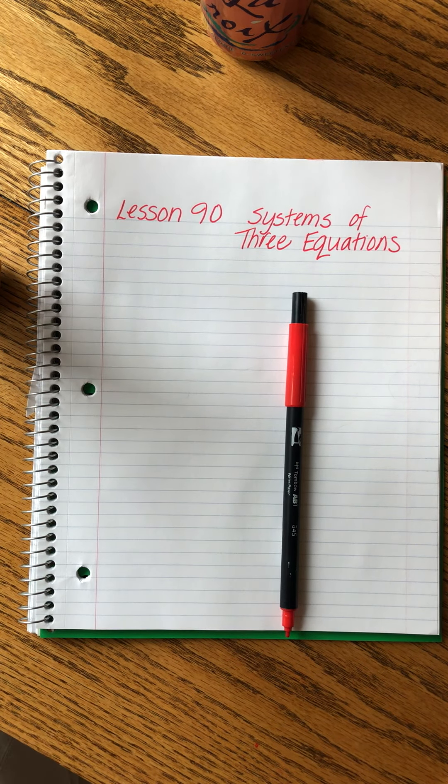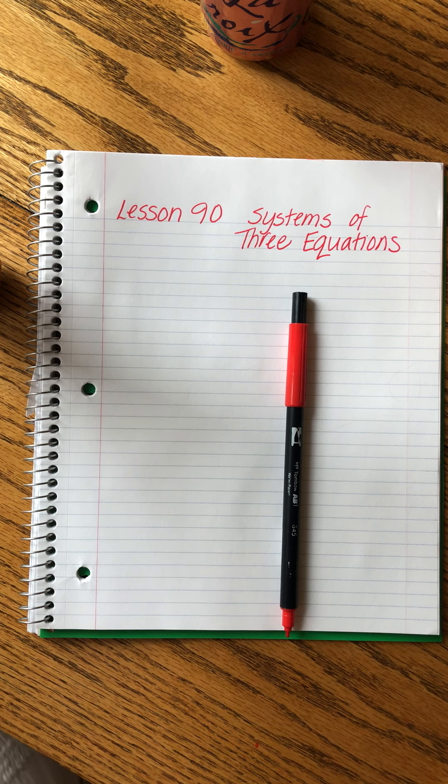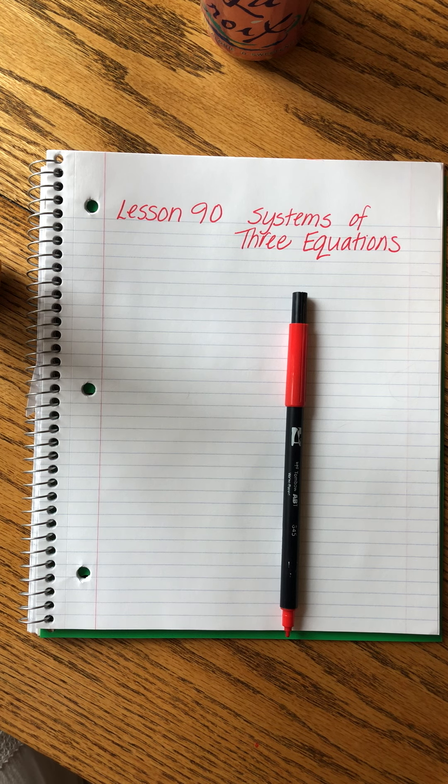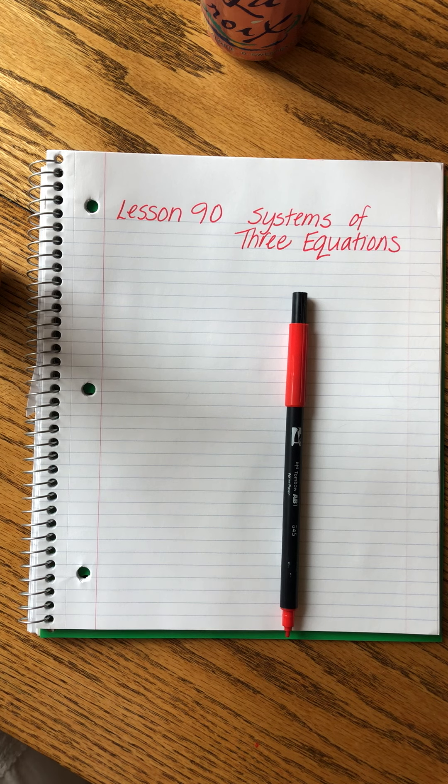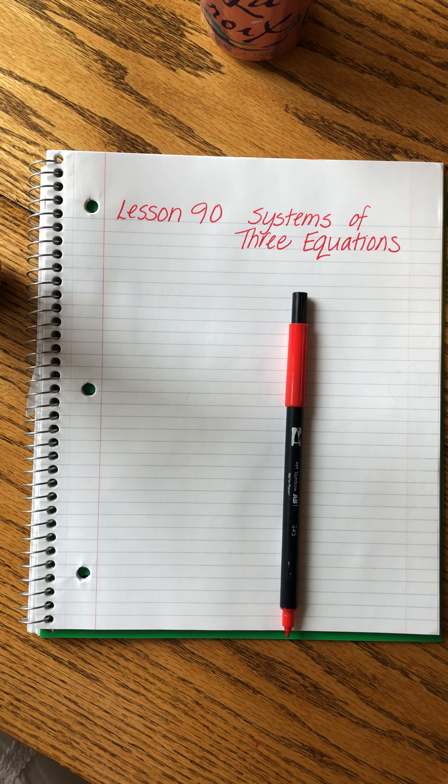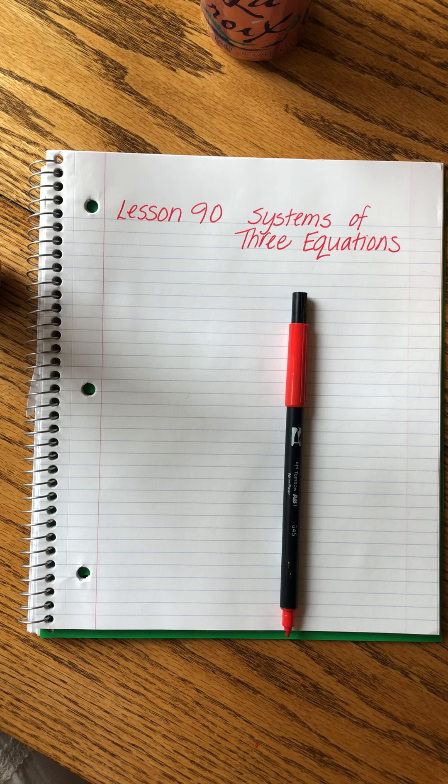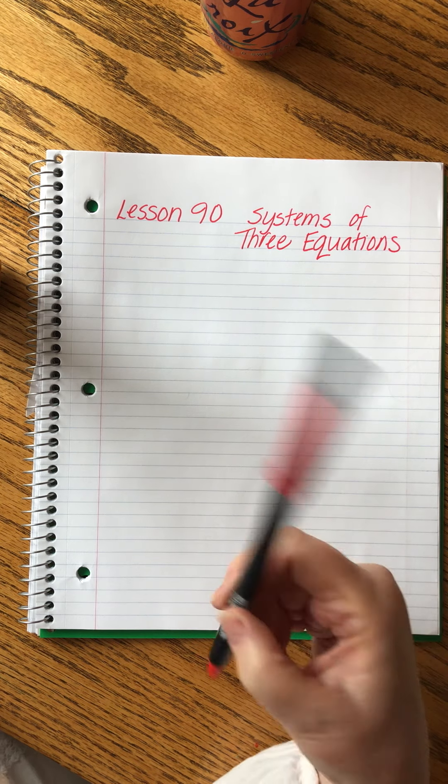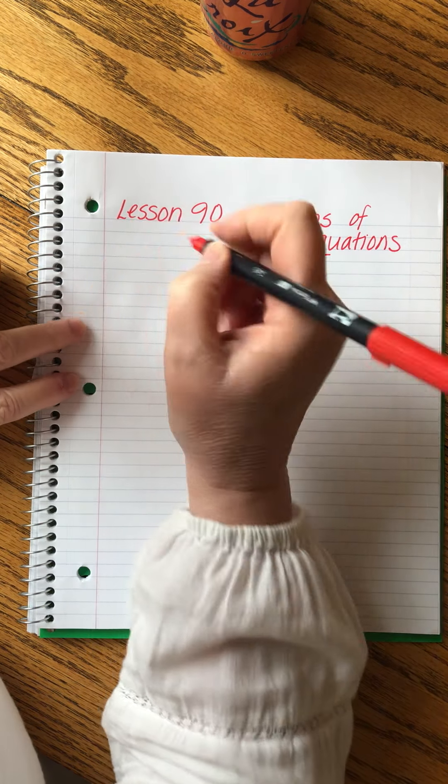Saxon Algebra 2 Lesson 90. Here's a fun lesson. We're going to start solving systems that have three equations and three letters in them. They're kind of cool and I think they're guaranteed to make you feel smart. So let's proceed.